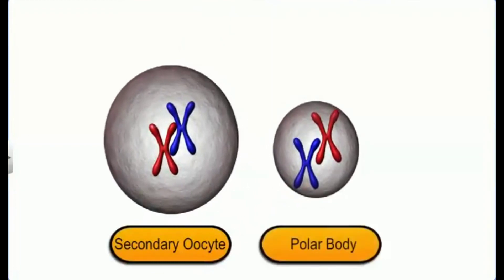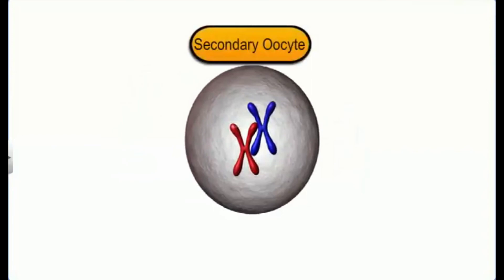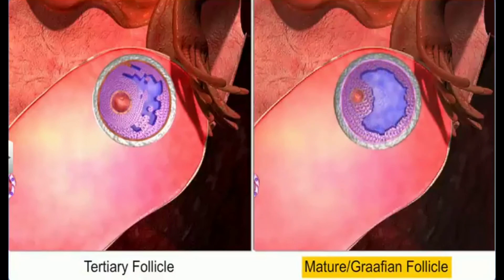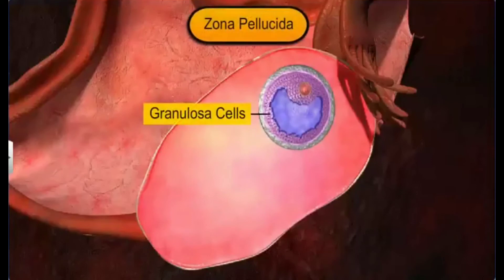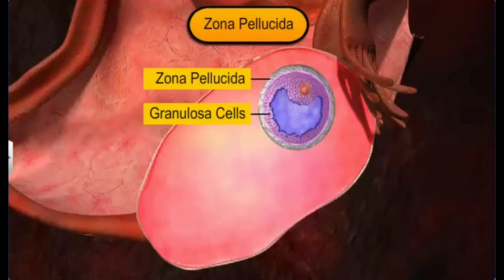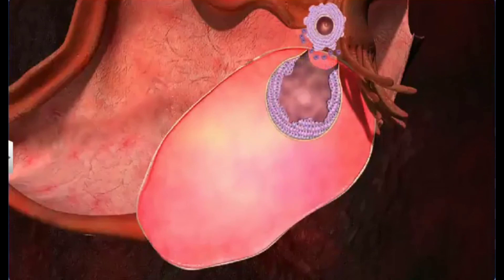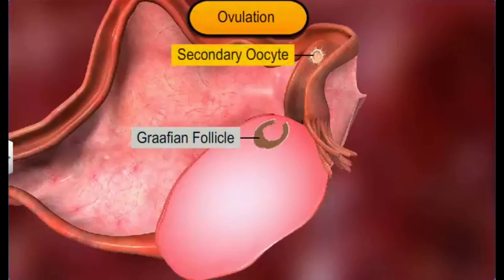This meiotic division is unequal and leads to a large haploid secondary oocyte and a tiny first polar body. The polar body is believed to degenerate, leaving the tertiary follicle with only the secondary oocyte or ovum. As the tertiary follicle develops into a mature Graafian follicle, the antrum grows and the secondary oocyte and surrounding granulosa cells are pushed towards one end. The granulosa cells secrete a glycoprotein substance that forms a membrane called the zona pellucida around the secondary oocyte. The ovum is then released when the Graafian follicle ruptures due to a surge of LH — a process called ovulation — and the oocyte is placed in the oviduct, where it awaits fertilization.